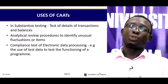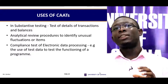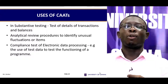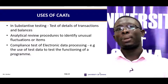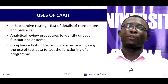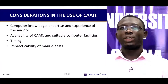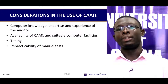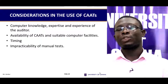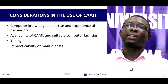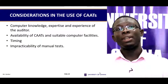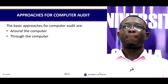The main aim of test data is to test whether the client's system will be able to detect errors or invalid transactions. CATs are used in substantive testing — tests of details of transactions and balances — for analytical review procedures to identify unusual fluctuations, and for compliance tests of electronic data processes. Key considerations in using CATs include the computer knowledge, expertise and experience of the auditor, availability of suitable computer facilities, timing, and impracticability of manual tests.